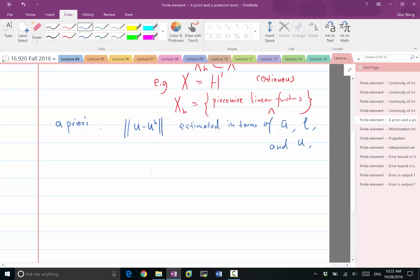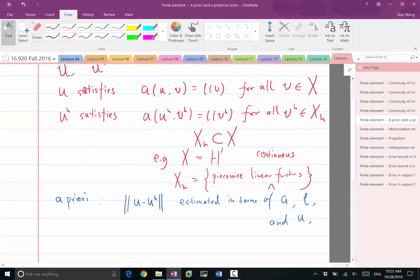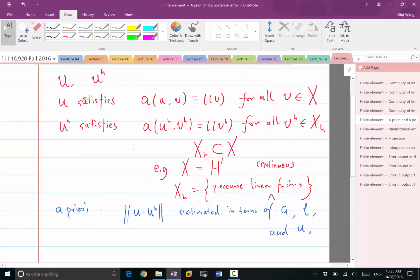So the error estimate is in some sense not computable. We can estimate it, but you can't really compute what the error estimate is, because it involves this U, which is the exact solution of the weak form.